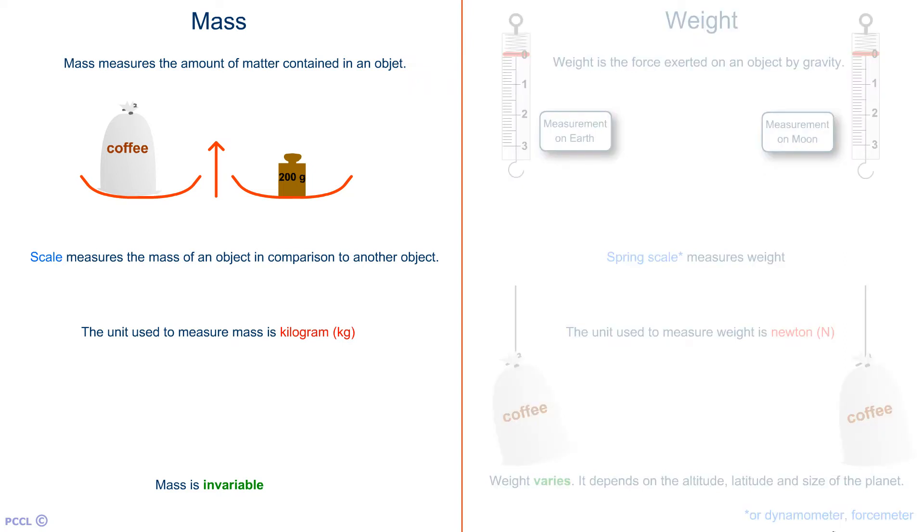The mass. To measure a mass, we use a balance. We compare a known mass with a mass we want to know, and we know it at equilibrium. Here, this bag of coffee has a mass of 200 grams. The device is a balance. The official unit is kilogram. It is the unity of the international system. I draw your attention to the fact that the symbol here is written kg in lowercase.